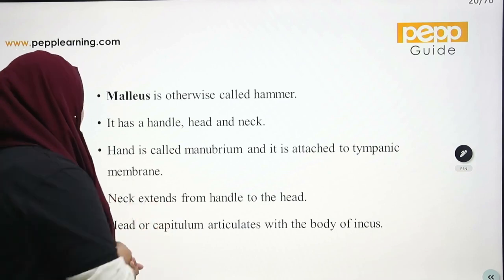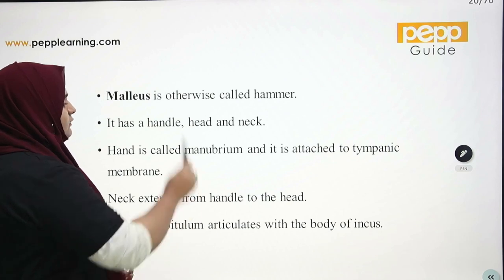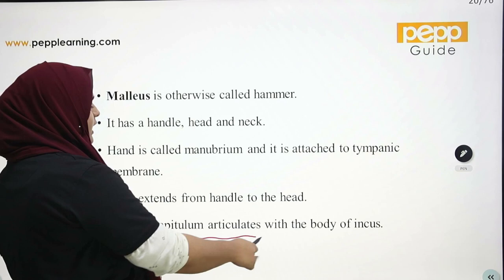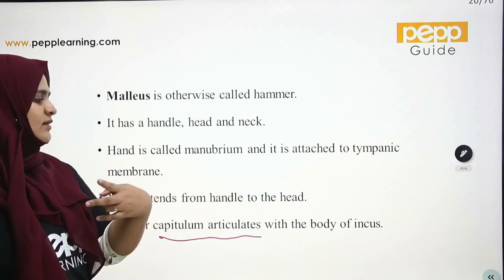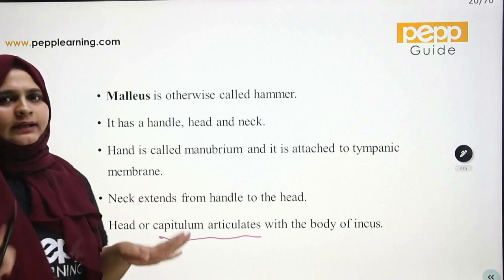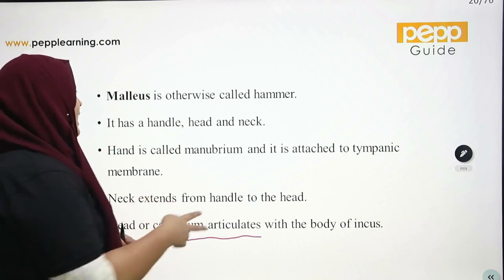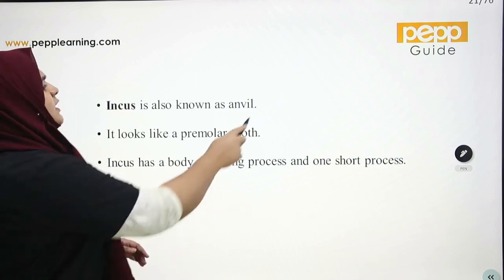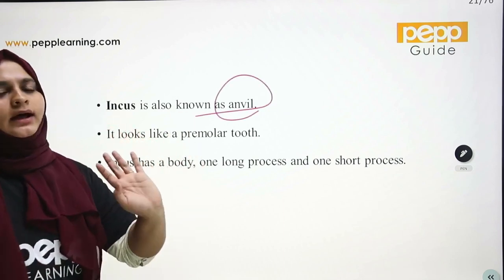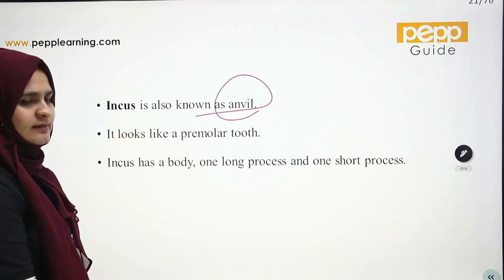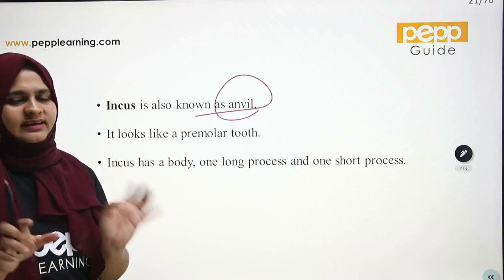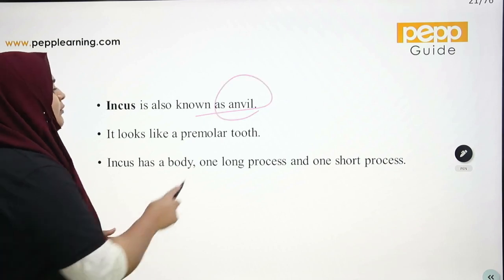The malleus has a head, neck, and handle. Parts are attached to the tympanic membrane. The incus is also known as the anvil and looks like a premolar tooth.